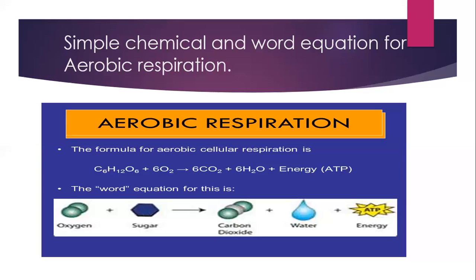If there is no oxygen available, anaerobic respiration will occur. Let's look at aerobic respiration first, which needs oxygen to occur. It produces a lot of ATP. This type of respiration takes place in the mitochondria of eukaryotic cells and in the cytosol of prokaryotic cells.